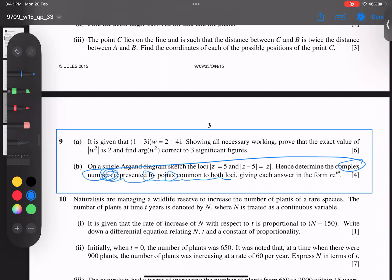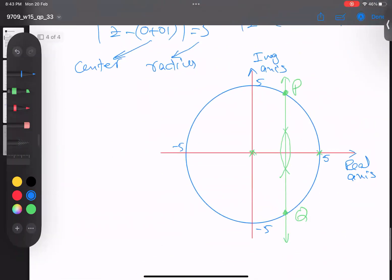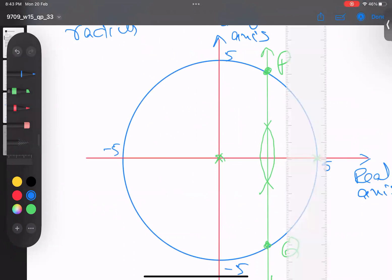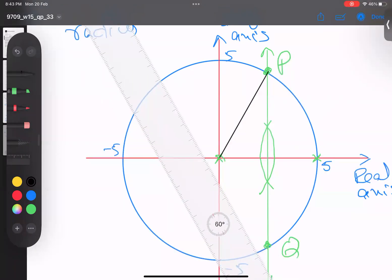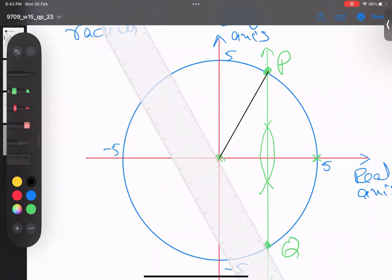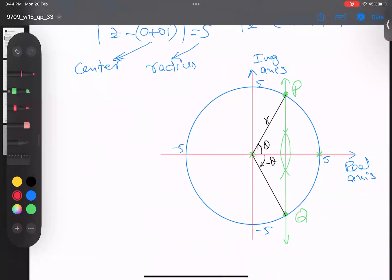He's asking: determine the complex numbers represented by the points where both loci meet, giving the answer in the form re^(iθ). This is exponential form: r is the modulus and θ is the argument. Let me find it.